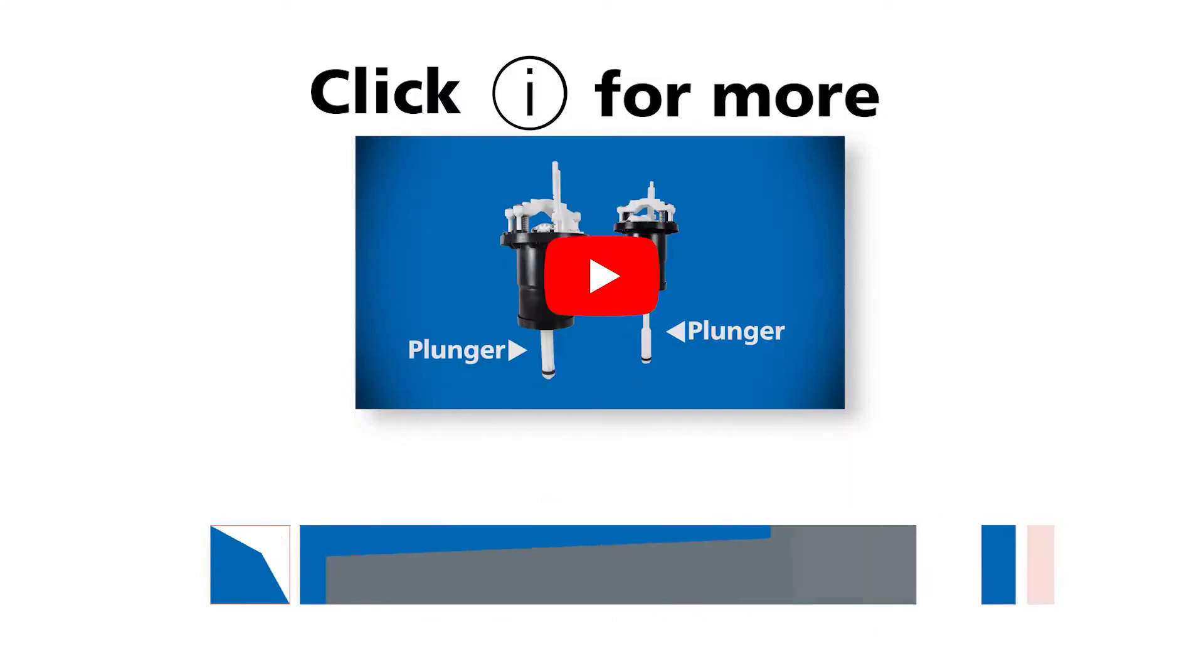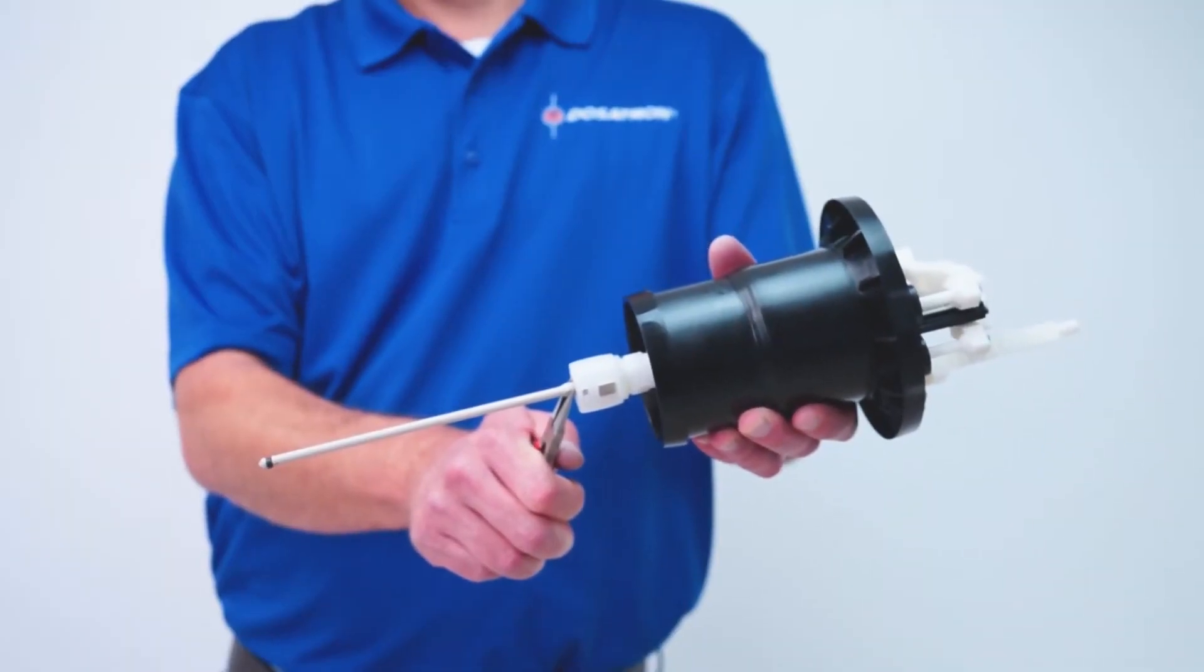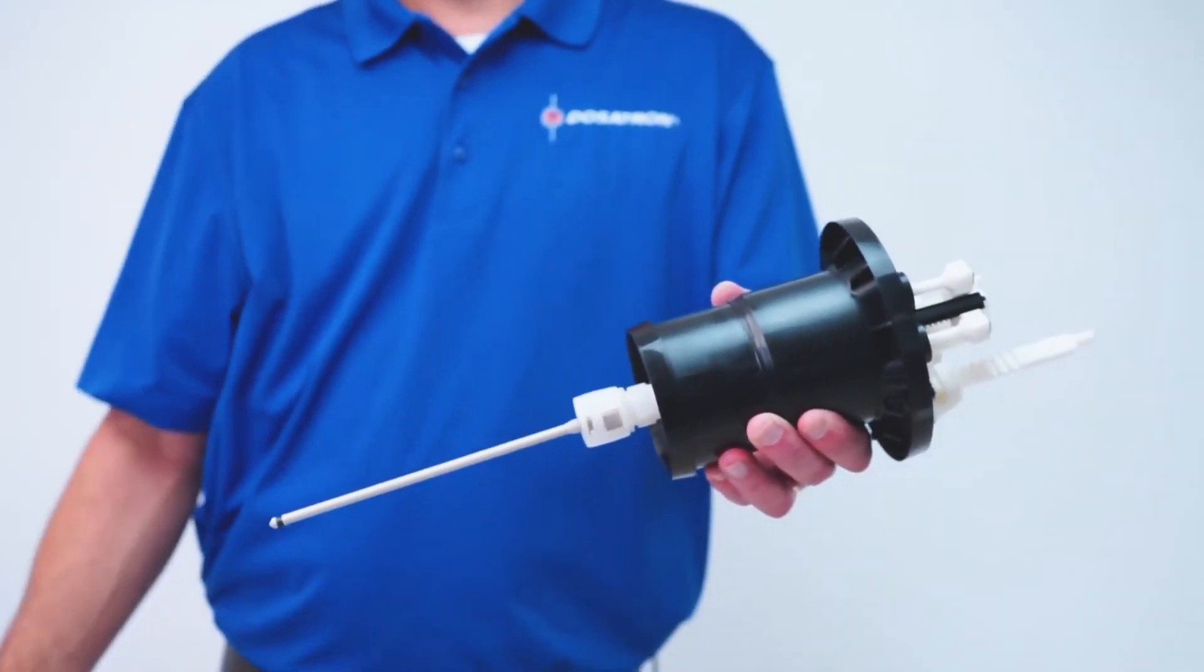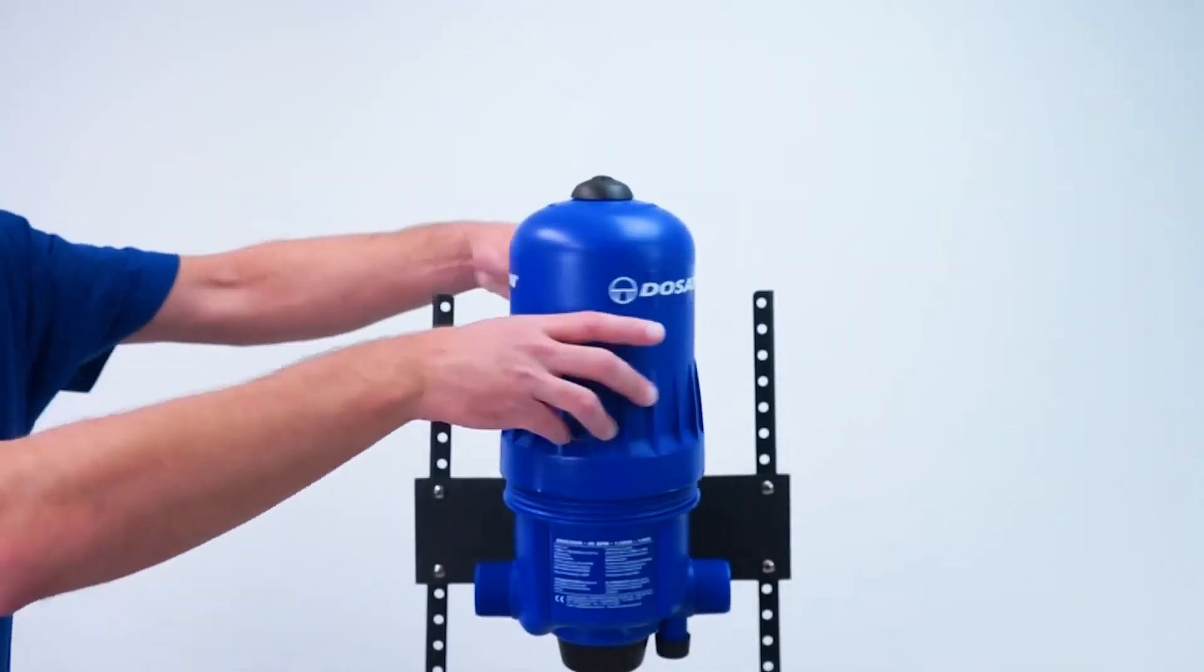For assistance in replacing the piston shell, please contact Dosatron technical service at 1-800-523-8499 or check out the D8 piston shell and actuator assembly replacement service video. Reattach the plunger using the needle nose pliers by aligning the top of the plunger with the retainer. Twist the plunger clockwise to lock. Place the piston back into the body and reinstall the blue bell housing hand tight.